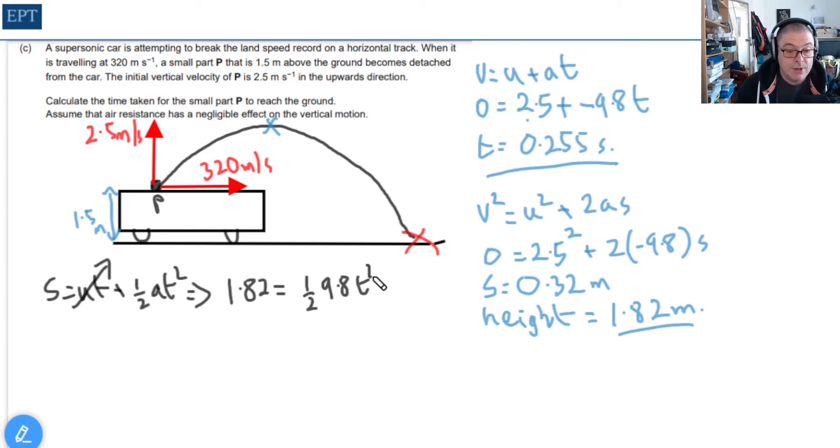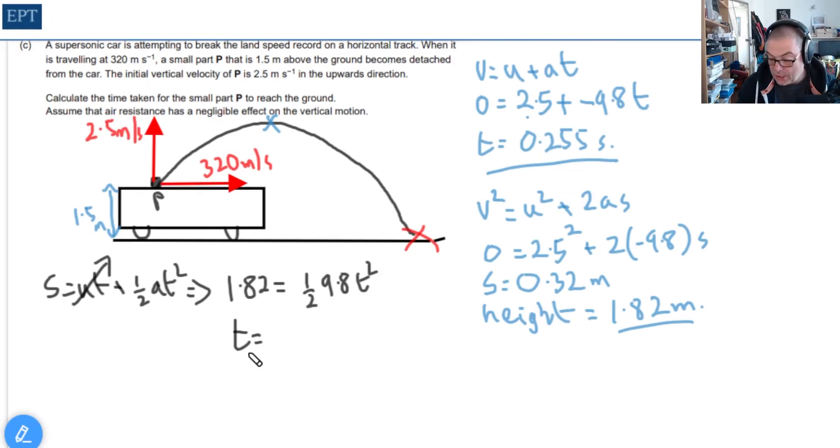I've changed the sign of 9.8 from negative to positive because the displacement is downwards, so I've set downwards as positive this time. It's moving positive 1.82 in the same direction as the acceleration, so they both have the same sign. This gives t equals 0.61 seconds. The total time is 0.255 plus 0.61, which equals 0.86 seconds (the mark scheme says 0.87 because I used 9.8 rather than 9.81).